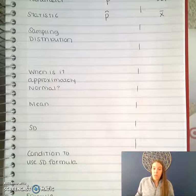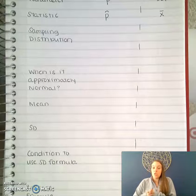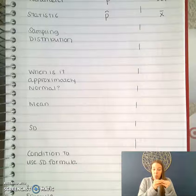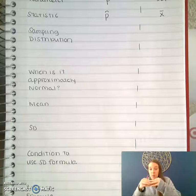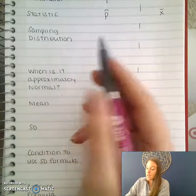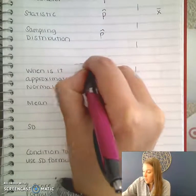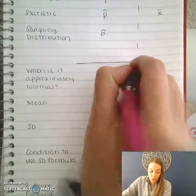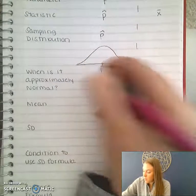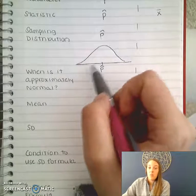When we started unit five we talked about sampling distributions. Remember that a sampling distribution is the distribution of a sample — if you took a sample, gathered the mean for that sample and plotted it, then took another sample and got the mean and plotted that, that's what a sampling distribution is. The sampling distribution for p-hat — looking at proportions — is going to be a normal distribution where p-hat is your mean, or where you start in the middle.